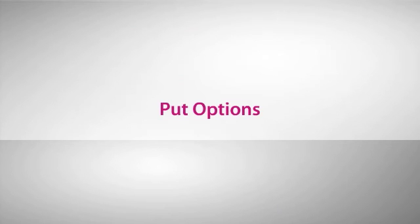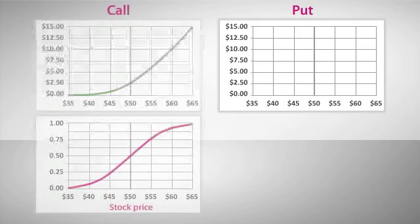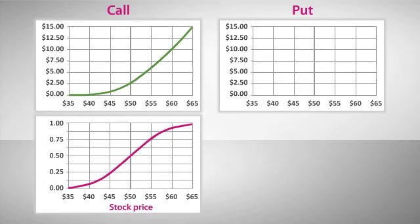Now let's look at put options. Put options also have delta, but they work a bit differently. So let's compare the delta of a put option with a call option. Now when you own a put option, the value of the put gets higher when the price of the stock moves down.